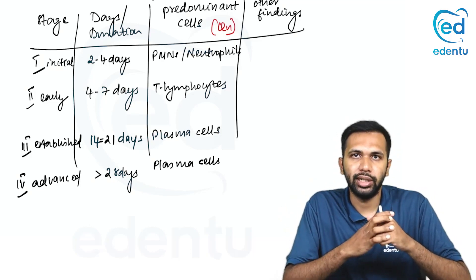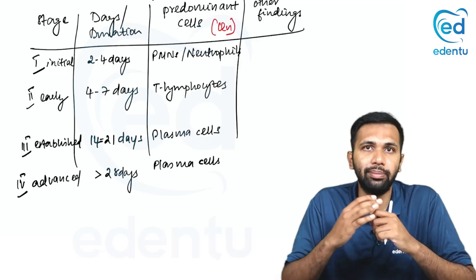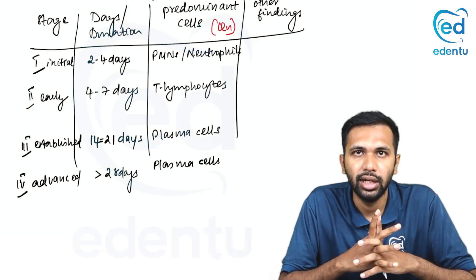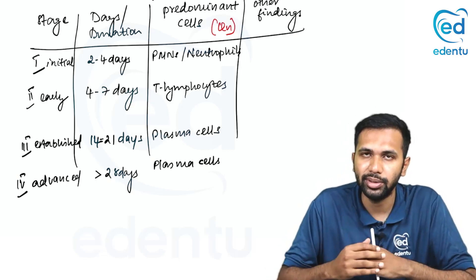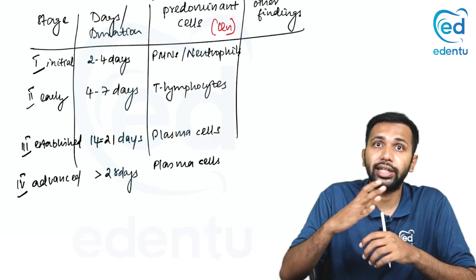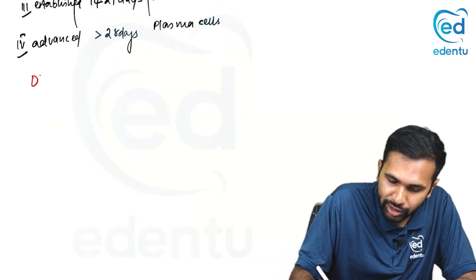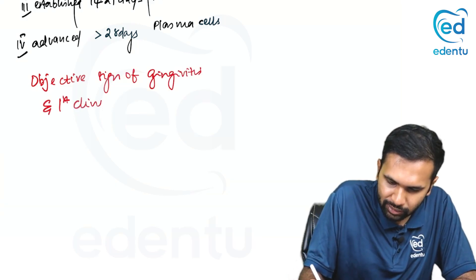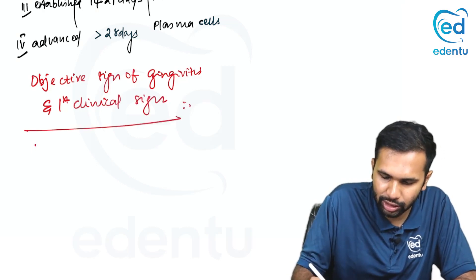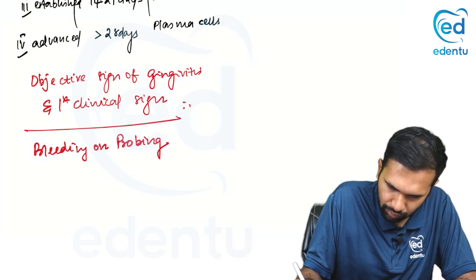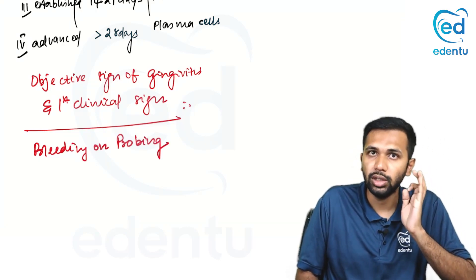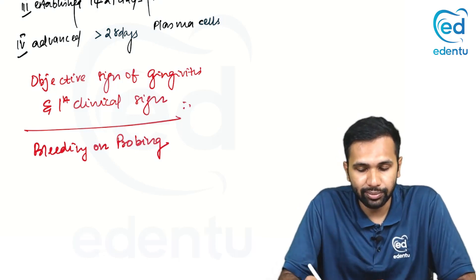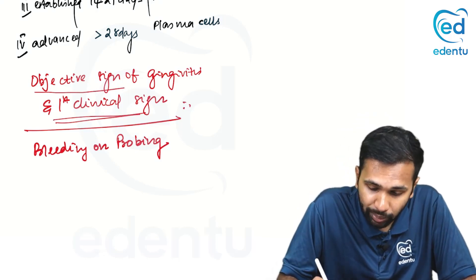Let us say a patient is coming to your clinic and you are an intern or a doctor. How will you diagnose gingivitis? It is based upon many signs and symptoms. The most objective sign — and the first clinical sign of gingivitis — is bleeding on probing. You put a probe, wait for 30 to 60 seconds, and check for bleeding.